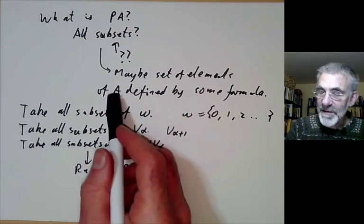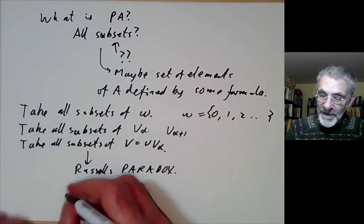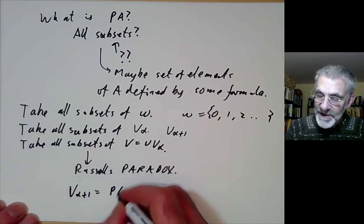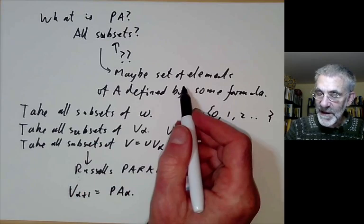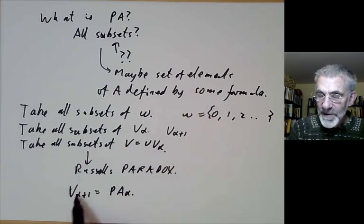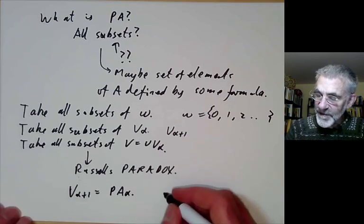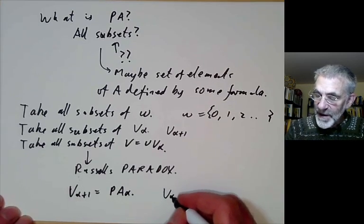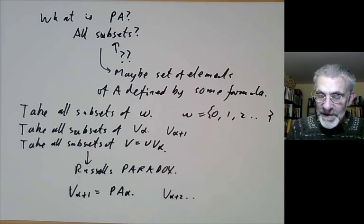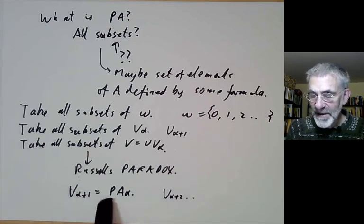There's another problem here that you know you may be defining say V alpha plus one as the power set of V alpha to be the set of all subsets of V alpha plus one defined by some formula. Well the problem is this formula might actually involve you know maybe quantifying over V alpha plus two or something like that.